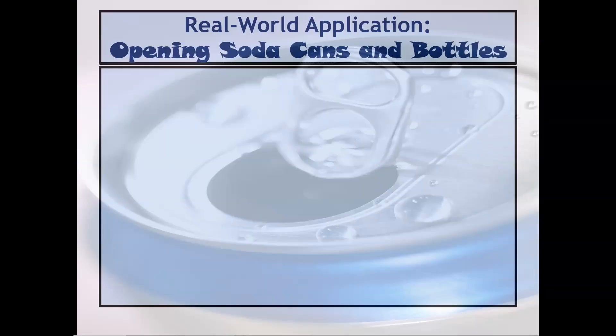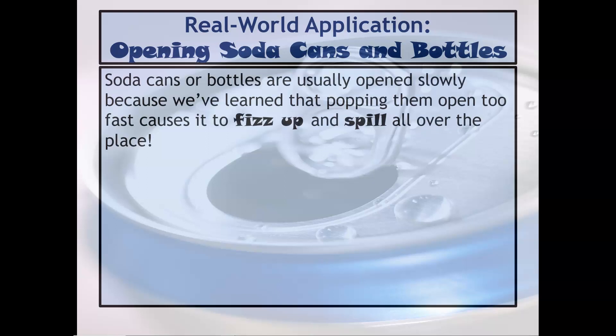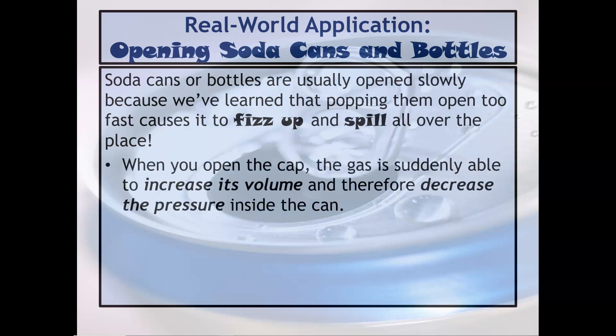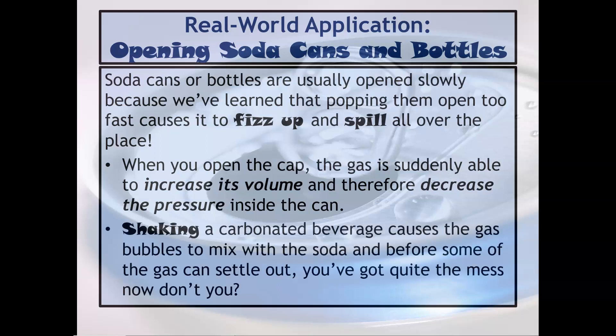Soda cans are a great example of changing the volume of gas. When you open a soda can, usually we open them slowly because if we open them fast, you're going to expect them to fizz up and spill all over the place. When you open the cap, the gas is suddenly able to occupy a larger volume, and therefore the pressure inside the can decreases. Shaking the beverage, however, causes the gas bubbles to mix with the soda, and before the gas can settle out, you've got quite a mess.